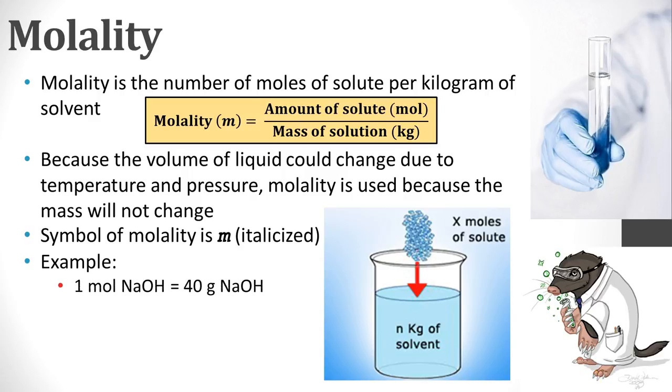An example of molality. One mole of sodium hydroxide is 40 grams. If I was to take 60 grams, that'd be 1.5 moles. In one kilogram of solution, that's going to give me a 1.5 molal solution of sodium hydroxide.